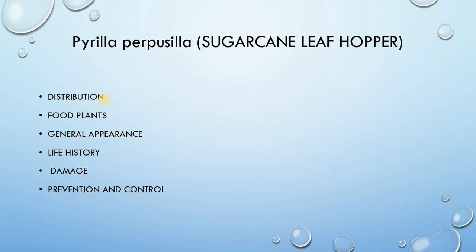The original host of the sugarcane leafhopper is not known, but it has been recorded feeding and reproducing on a wide range of species of Graminae, Leguminae and Moraceous families. Though Pyrella is a major pest of sugarcane, it also attacks maize, wheat, barley, bajra, oats, sorghum, and sudan grass, etc.